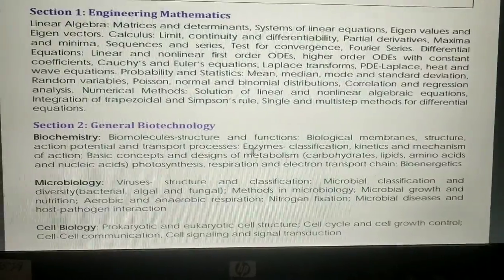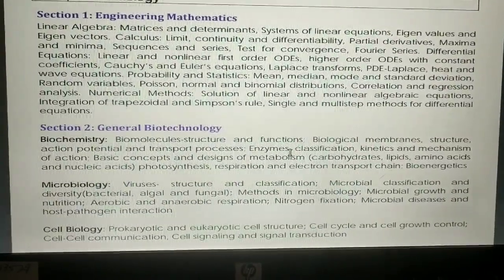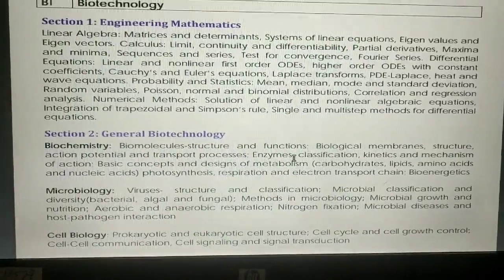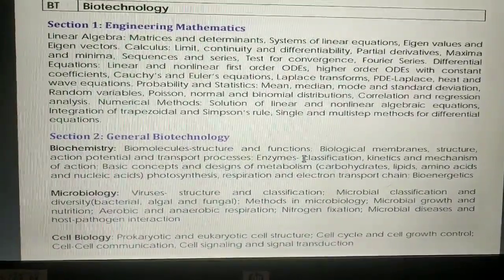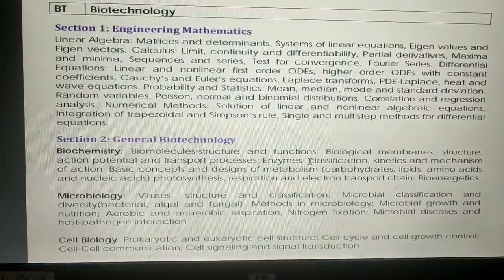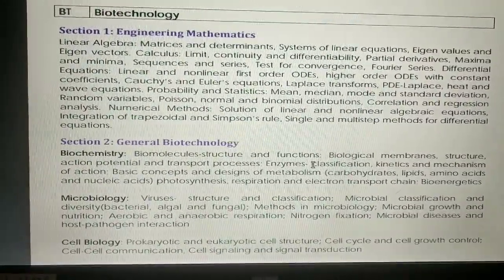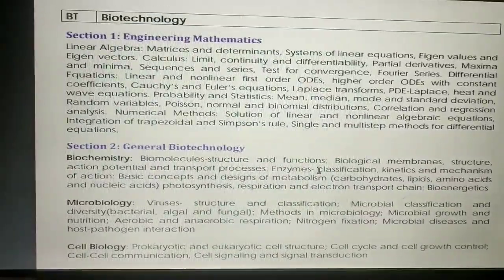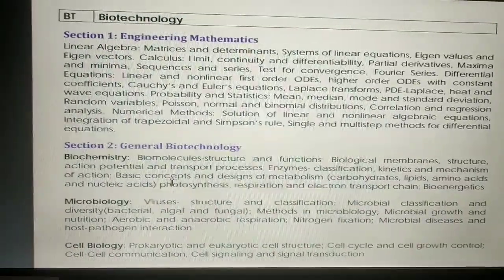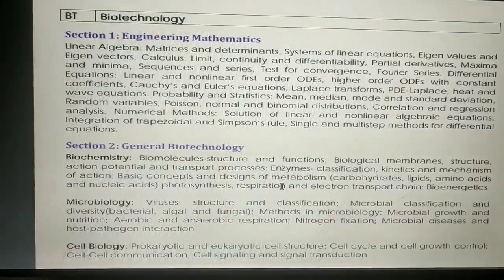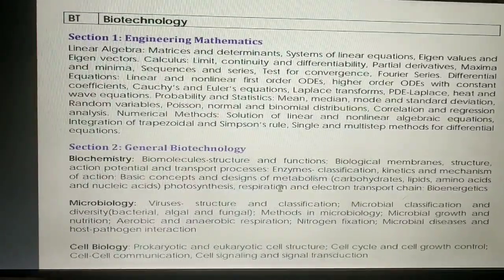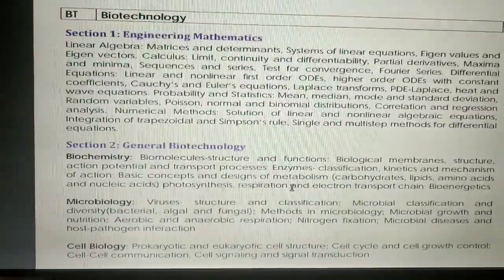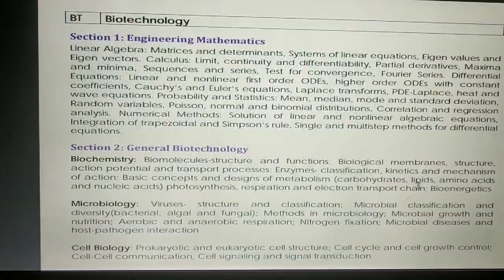If there is a question in the GATE Biotechnology exam, there are graphs related to enzymes. When you go to the enzyme section, you can study the graphs — like the Michaelis-Menten equation graph, the Lineweaver-Burk (LB) plot, and the Hanes-Woolf (HB) plot. Generally, questions are asked on Km and Vmax. If there are any questions from photosynthesis, there are rarely questions there. There are many questions from bioenergetics.